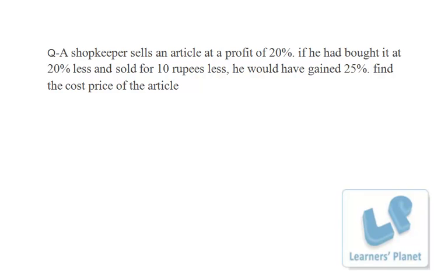Profit is 20%, that means SP to CP ratio will be 1.2 or I can say 6 by 5. That means selling price by cost price, or I can say selling price is 1.2 times cost price because profit is 20%.